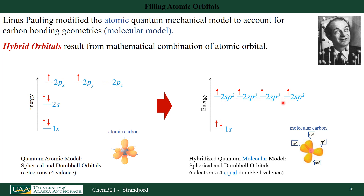Each of these sp3 orbitals can hold two electrons, but based on Hund's rule, only one electron is placed in each initially. Solving the quantum mechanical probability mathematics yields the 1s orbital still near the nucleus and spherical, plus four new degenerate sp3 orbitals all of the same shape. The two electrons that fill each sp3 orbital will come when carbon shares electrons with other atoms during bonding. In three dimensions this looks tetrahedral, which closely represents what organic molecules actually look like — they have a tetrahedral shape. This is called the hybridized quantum mechanical orbital model.